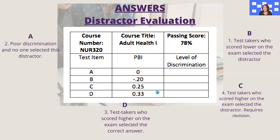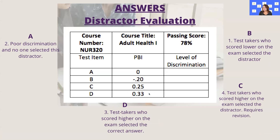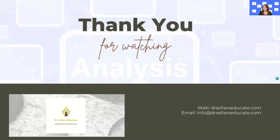For option D, if you chose number three — test takers who scored higher selected the correct answer — you are correct, because D has a positive PBI of 0.33, which is a good range since it's greater than 0.30. Exceptional or very good would be 0.40 or above. We hope that clarified key components related to item discrimination and distractors.